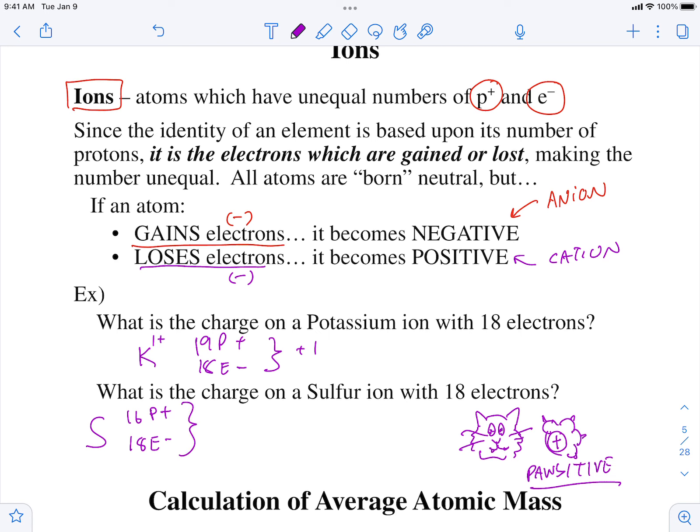And so they're saying that this sulfur here has 18 electrons. What is the overall? Negative two or two minus, right? So the symbol you write is S with a two minus in the corner.